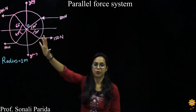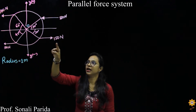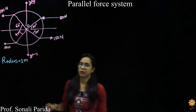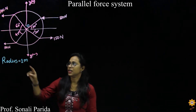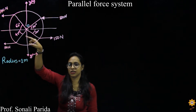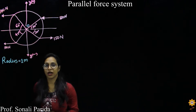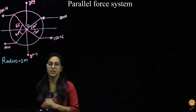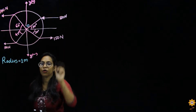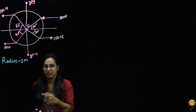This is the given problem on a parallel force system wherein all the forces are directed along the x-axis. The data given to us is that the radius of this circle is one — that is, it is a unit circle. We have to locate the resultant force with respect to O. Since all the forces are parallel and directed along the x-axis, the resultant will also be directed along the x-axis.